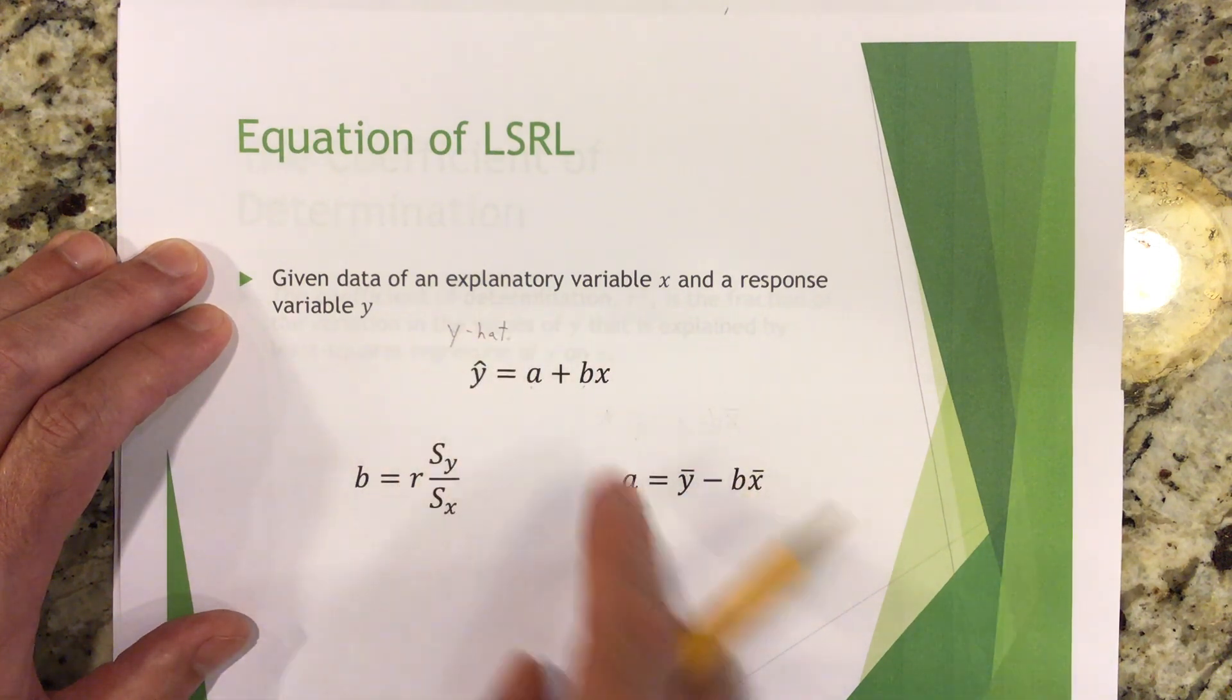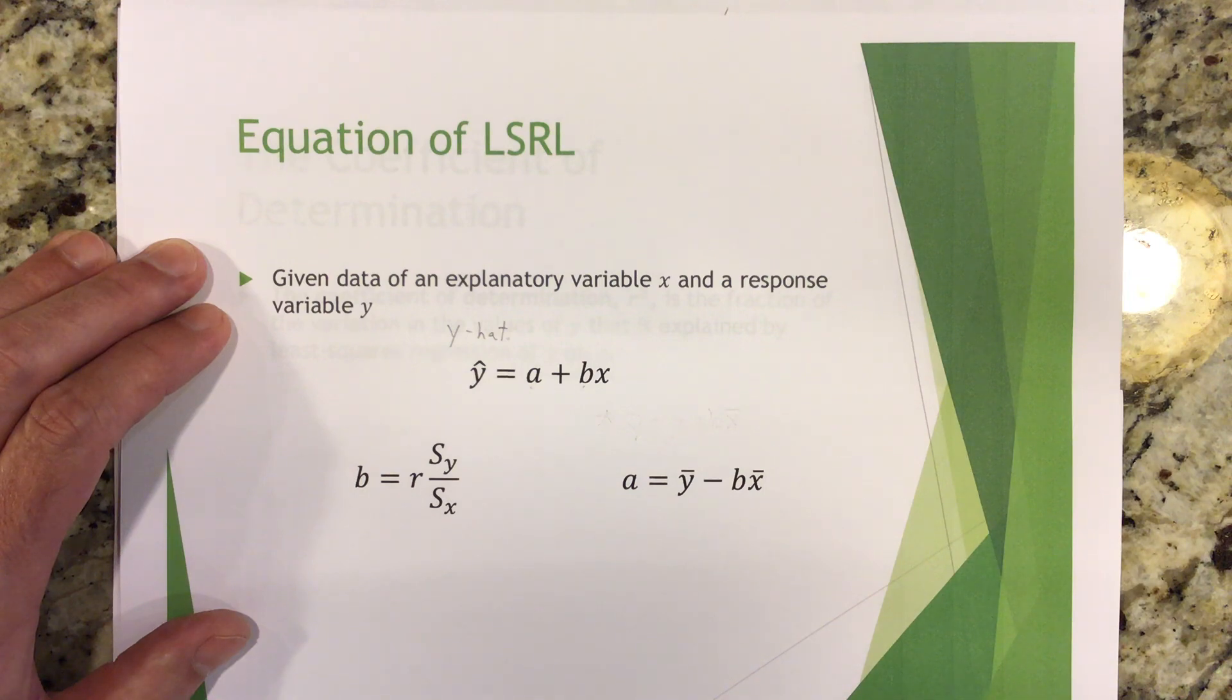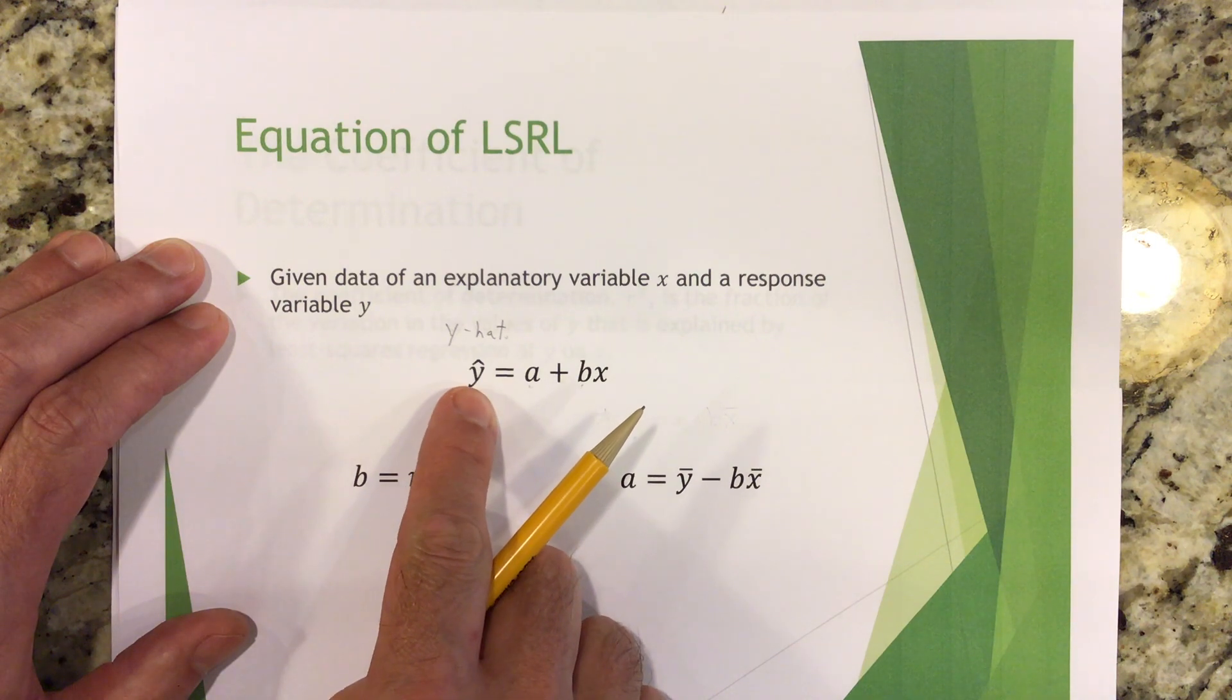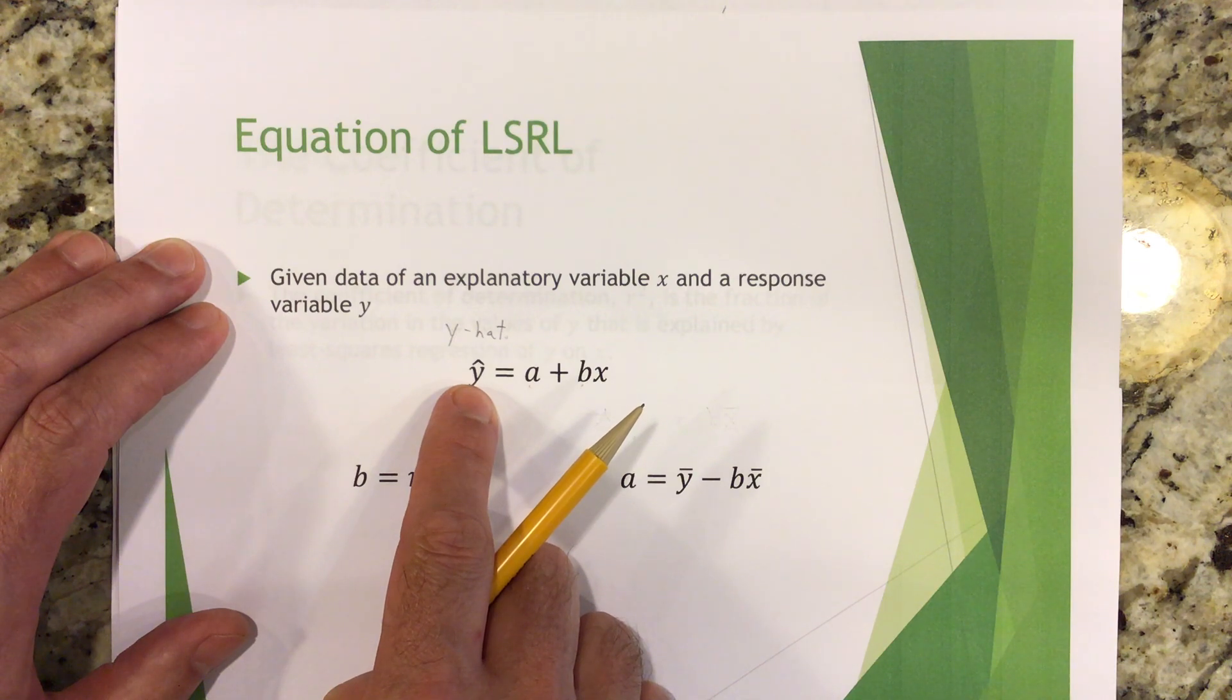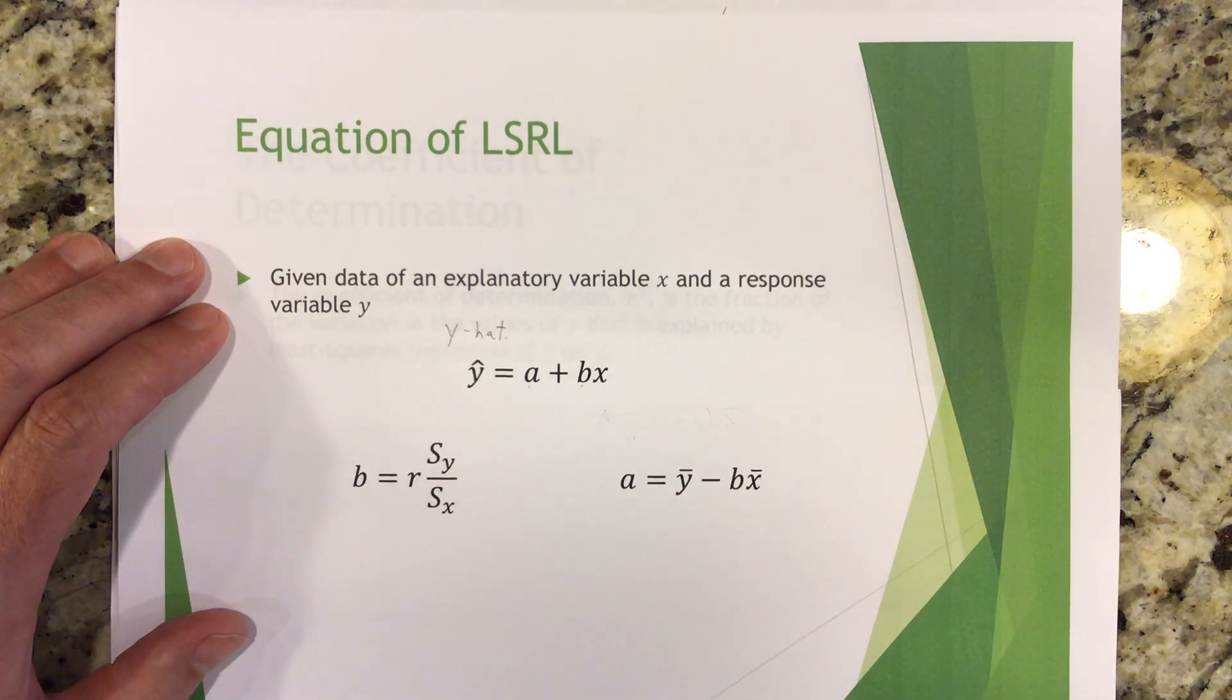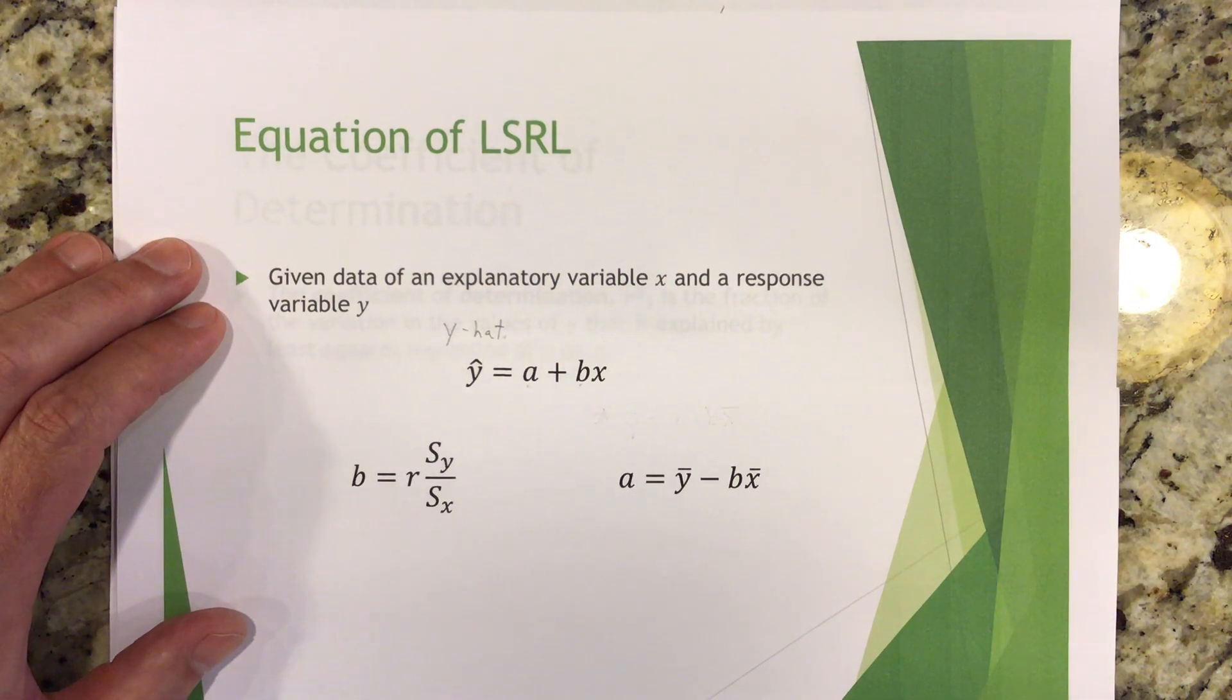This linear equation that we made came from sample data, which makes it a statistic. Okay, later on when we get to chapter 14, we'll talk about there's some unknown parameter. There's some unknown perfect best fit line. But this, of course, is not that perfect best fit line. This is the line that best fits our sample bivariant data, right? Which means it's a statistic because it came from sample data, right? It's not a parameter. A parameter comes from a census, from the entire population. So anyway, that's our equation. Please don't forget the hat when you do these equations. That's a common mistake.